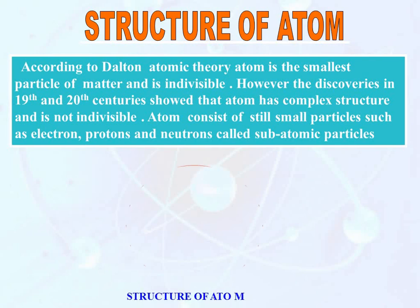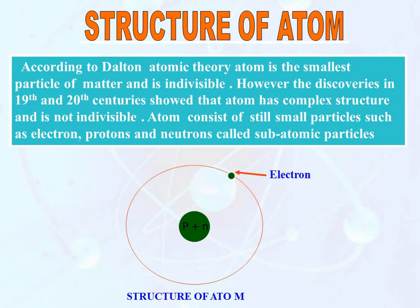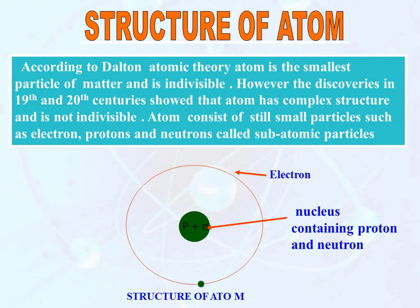So this is the structure of an atom. In the center, the nucleus is present which contains neutrons and protons, and electrons revolve around the nucleus in a circular path called orbits. The structure is shown as like this.